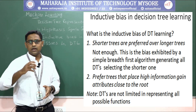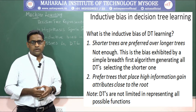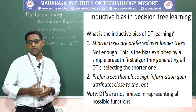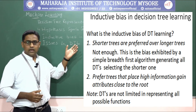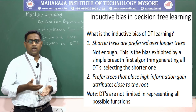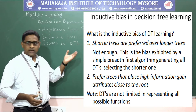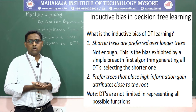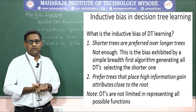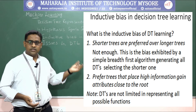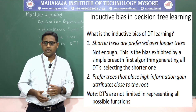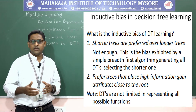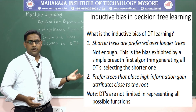The second answer is that decision tree learning prefers trees that place high information gain attributes close to the root. So the root node will always have the highest information gain value. Note that decision trees are not limited in their ability to represent all possible functions.